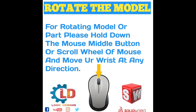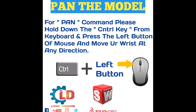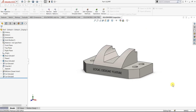Next is rotate the model. For rotating the model or part, please hold down the mouse middle button or scroll wheel and move your wrist in any direction. Next is pan the model. For the pan command, please hold down the Control key from your computer keyboard and press the left button of the mouse and move your wrist in any direction. Now we will discuss in video tutorial.